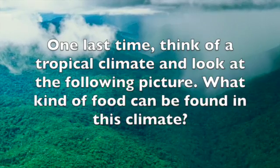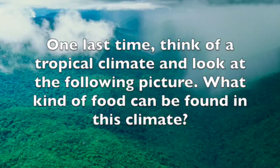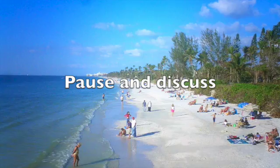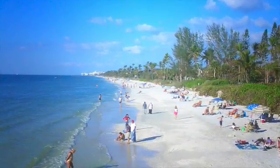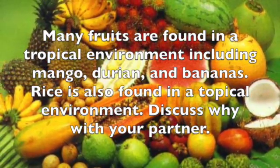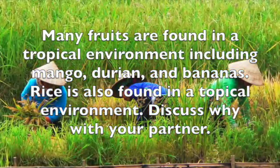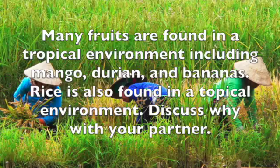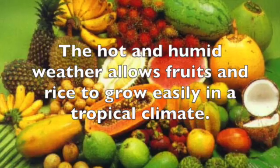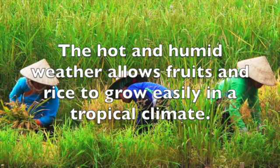Think of a tropical climate and look at the following picture. What kind of food can be found in this climate? Many fruits are found in a tropical environment, including mango, durian, and bananas. Rice is also found in a tropical environment. The hot and humid weather allows fruits and rice to grow easily in a tropical climate.